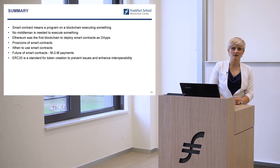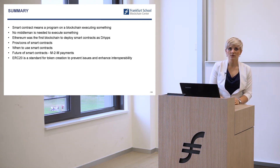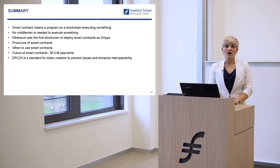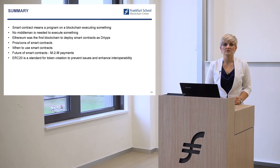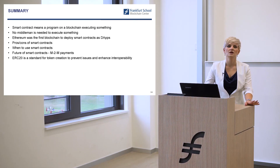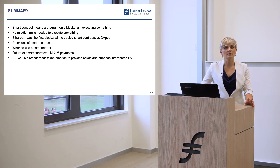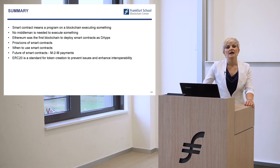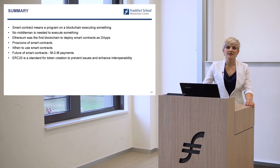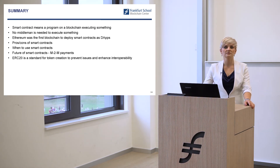To sum up: a smart contract is a program on a blockchain that executes something with no middleman needed. Ethereum was the first blockchain to deploy smart contracts as dApps — decentralized applications. There are pros and cons, and when to use them is always up to the user. The future of smart contracts could be machine-to-machine payments, among many other applications. And there's the ERC-20 standard created by the Ethereum community to prevent fraud and enhance interoperability — have a look at it. Thank you very much.